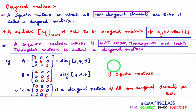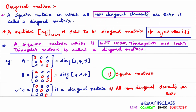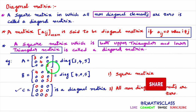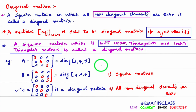To conclude: a square matrix in which all non-diagonal elements are 0 is called a diagonal matrix. What you should remember: a diagonal matrix is a square matrix, and all non-diagonal elements in that square matrix must be 0. Forget about the diagonal elements — diagonal elements may be 0 or may not be 0. I hope you understand the definition of diagonal matrix.